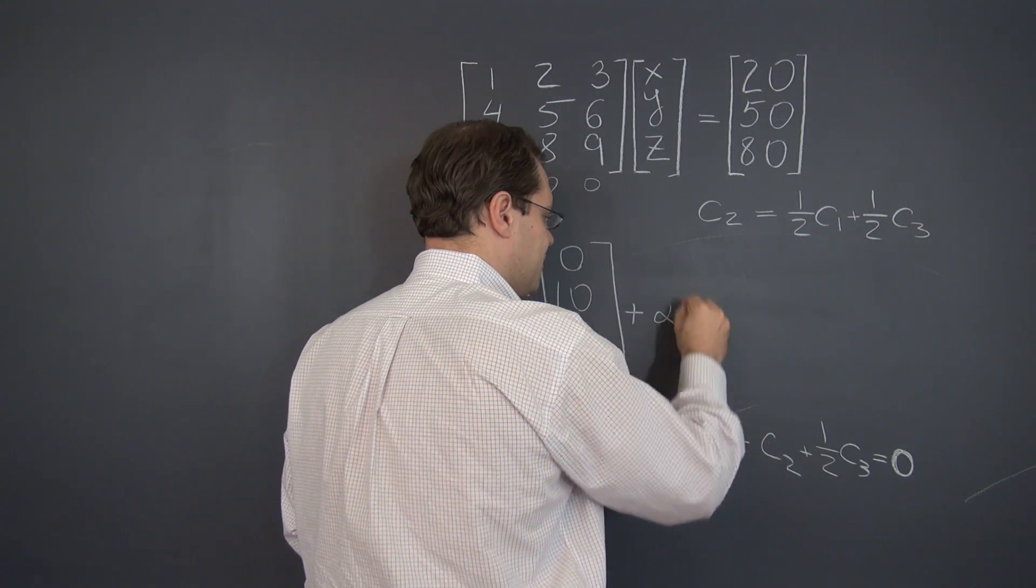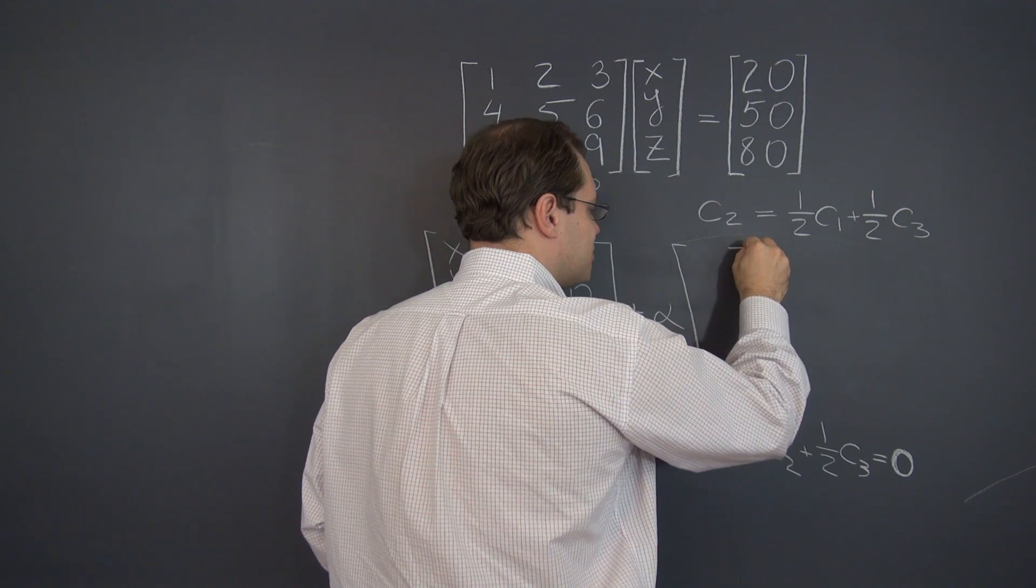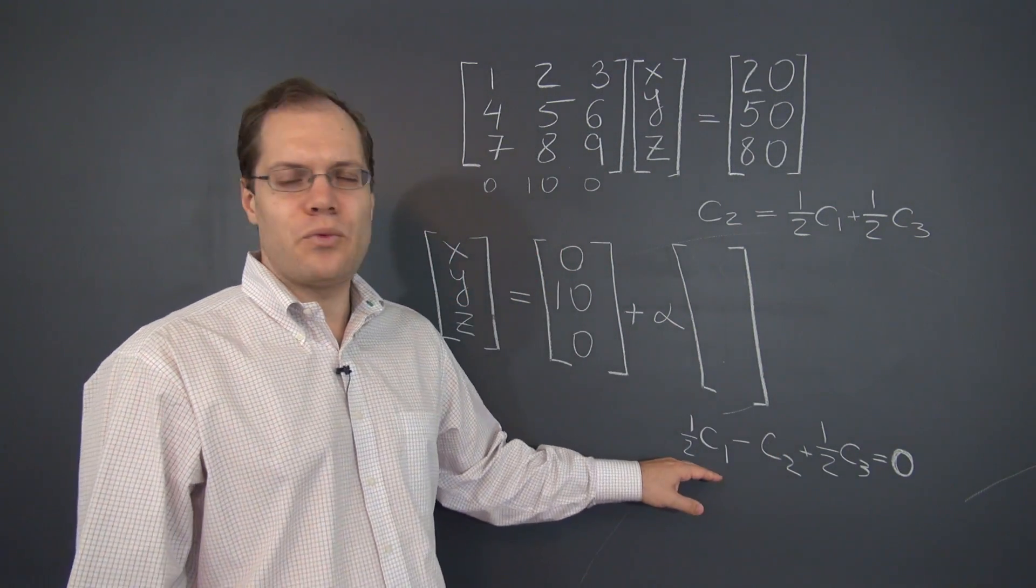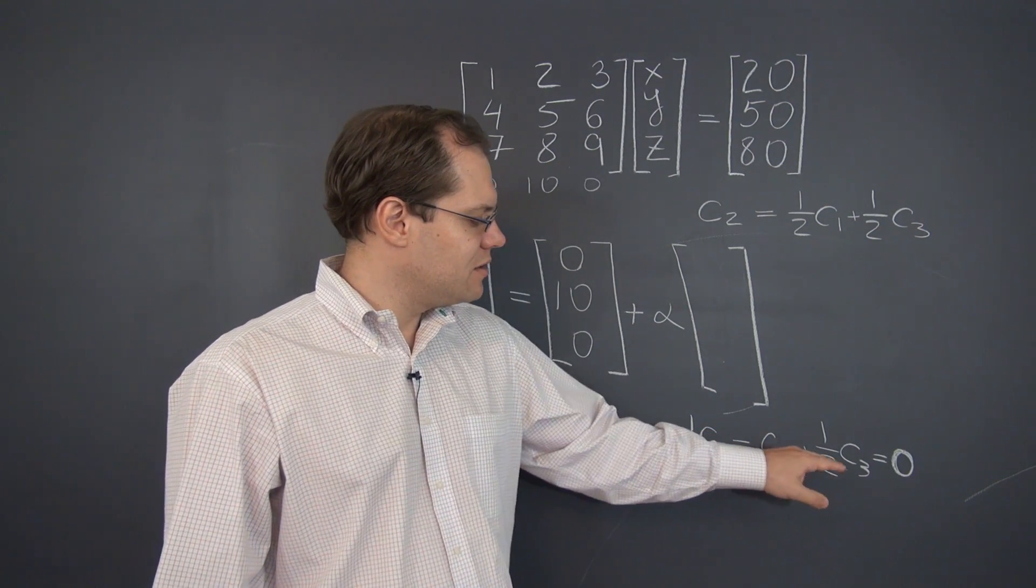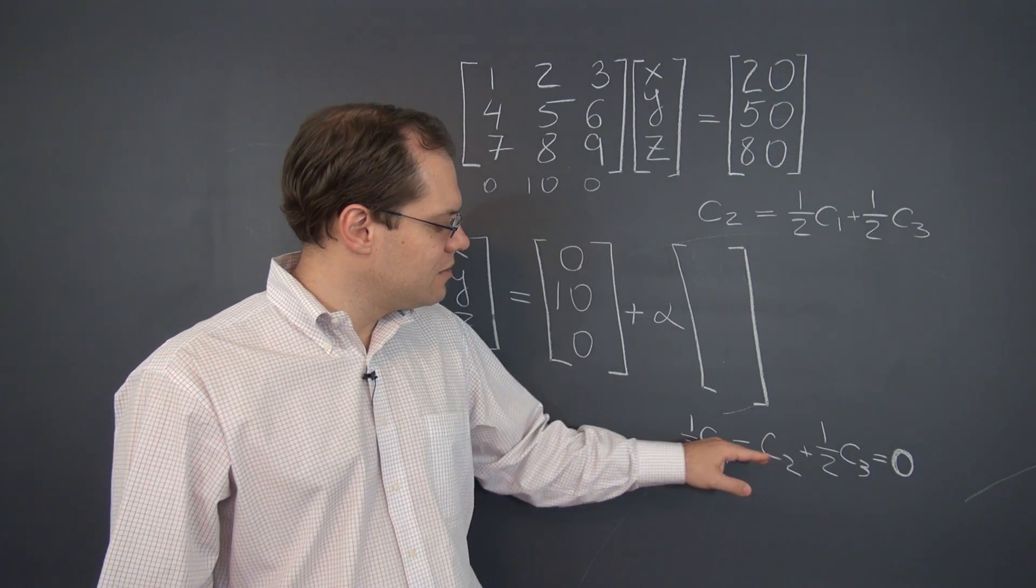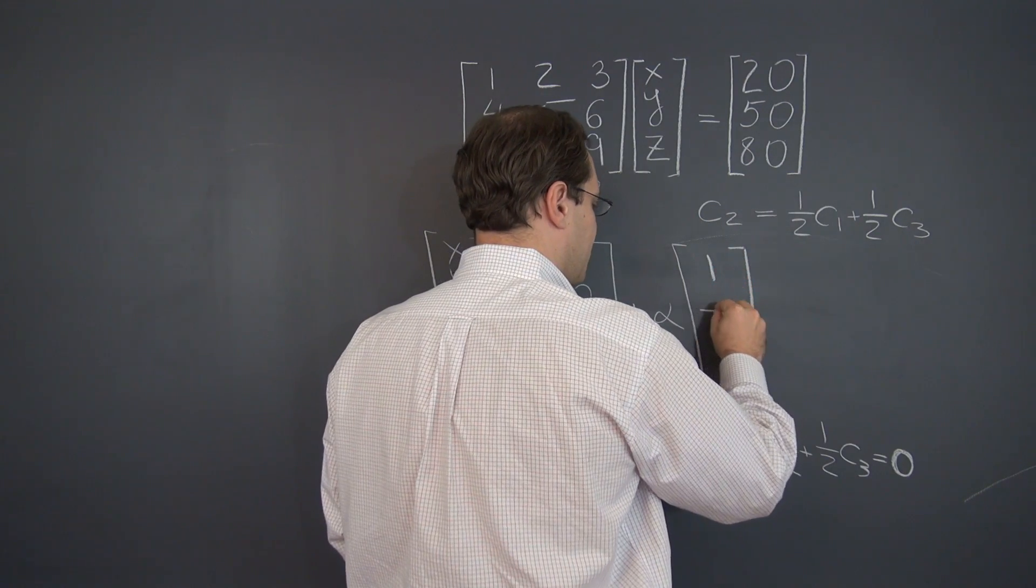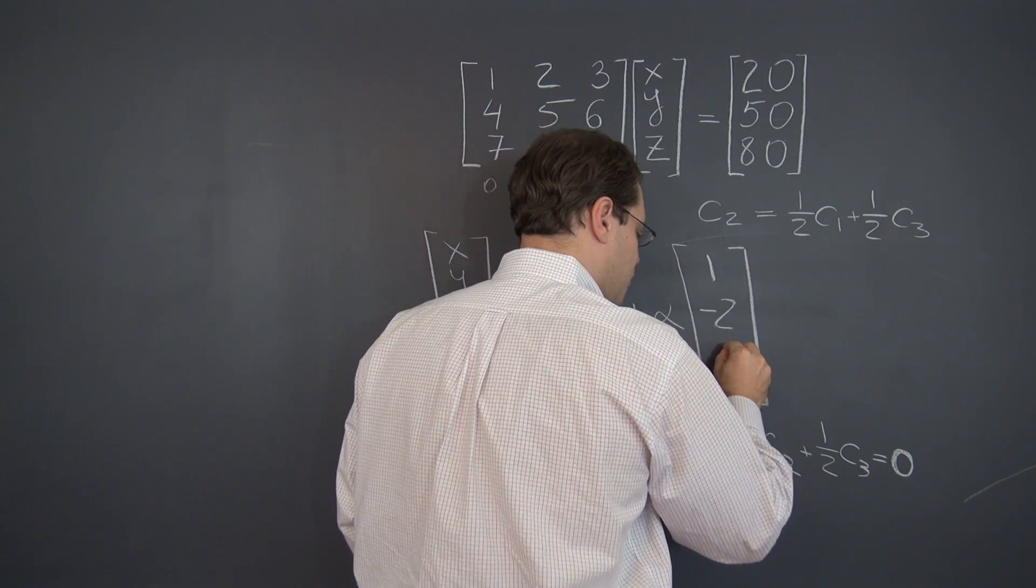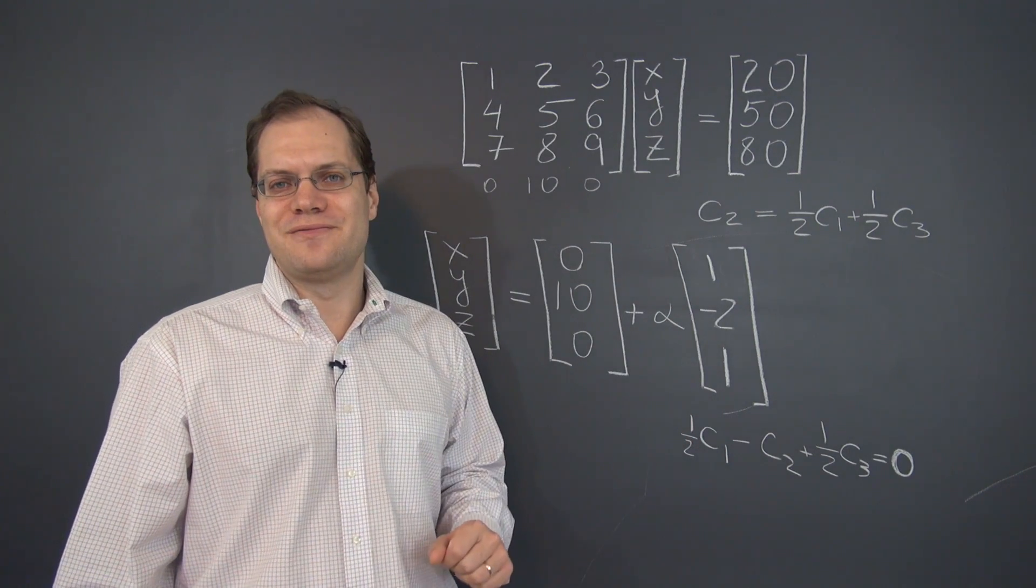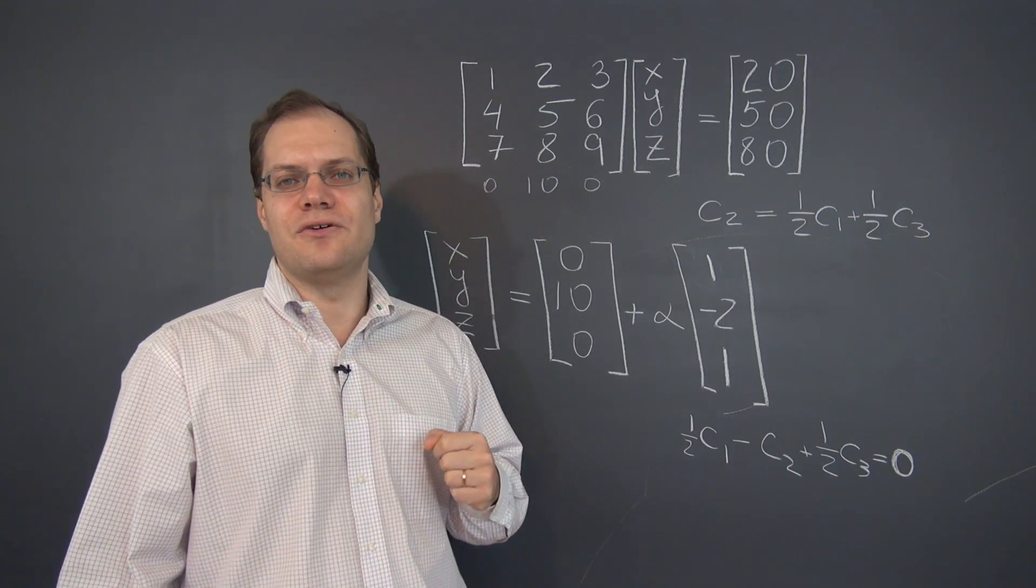The coefficients of our non-trivial linear combination are 1 half minus 1 and 1 half. So we can write plus alpha. This is capturing the null space. And I think that just about everybody prefers integers. So instead of writing 1 half minus 1, 1 half, we'll multiply the whole linear combination by 2 and we'll have 1 minus 2, 1. Okay, and the system is solved. So very nice and very interesting, at least I think so.